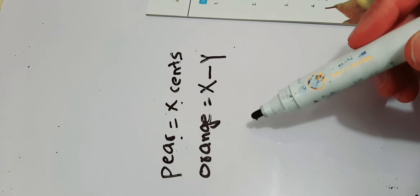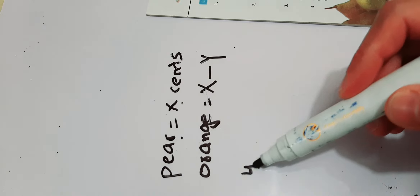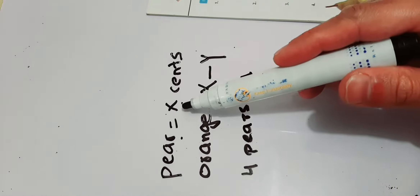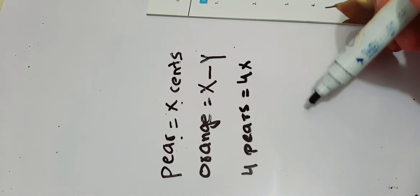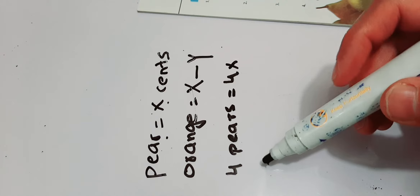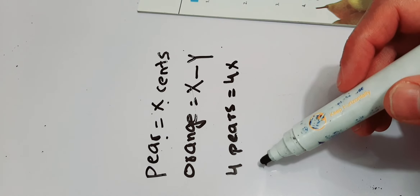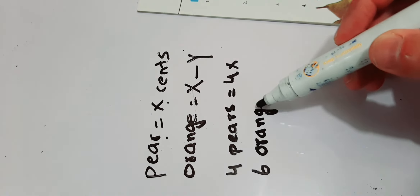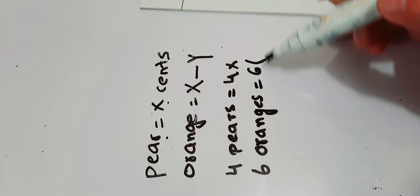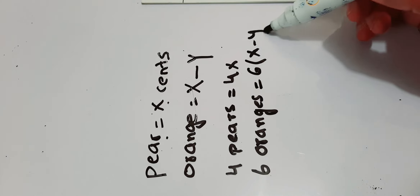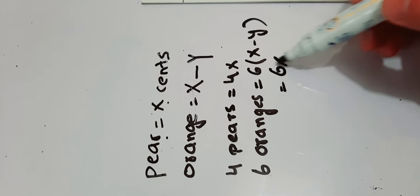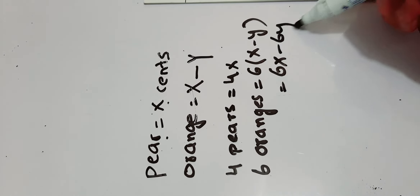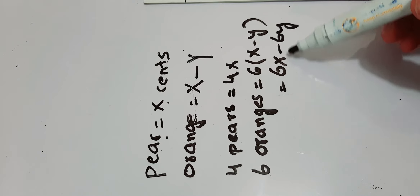Now you have to find the cost of 4 pears. So 4 pears will cost 4 times x, which is 4x cents. And half a dozen oranges — half a dozen means 6 oranges — so the cost of 6 oranges will be 6 times (x minus y), that is 6x minus 6y cents. This is the cost of half a dozen oranges.